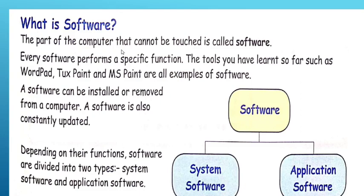The part of the computer that cannot be touched is called software. Every software performs a specific function. The tools you have learned so far, such as WordPad, TuxPaint, and MS Paint, are examples of software. Software can be installed or removed from a computer, and software is also constantly updated.